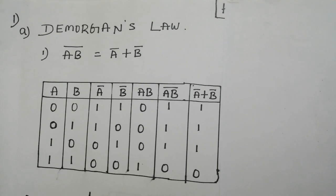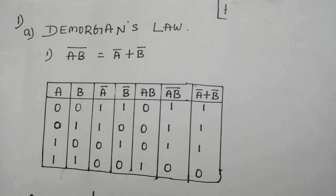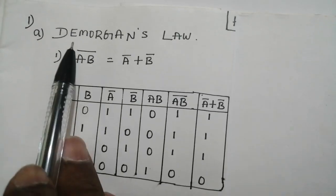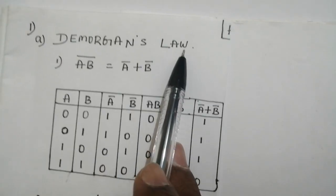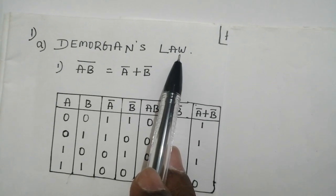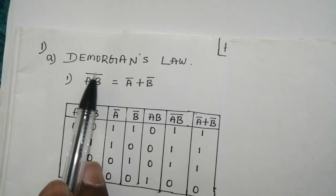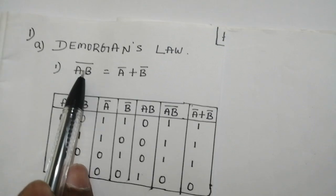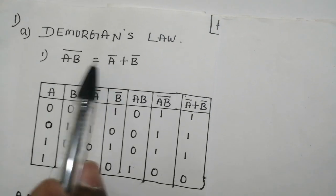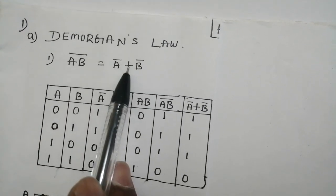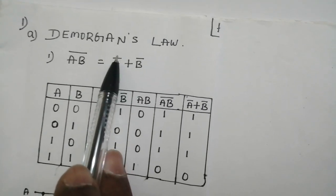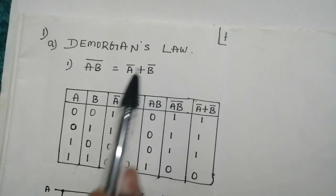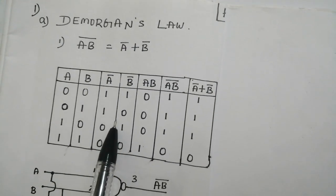The first experiment in digital system design lab is verification of De Morgan's law. De Morgan's first law states that the complement of product of two variables is equal to the sum of complement of each variable. The respective truth table is given below.